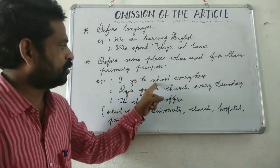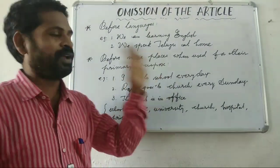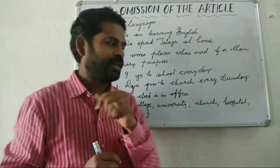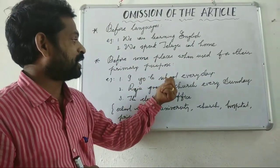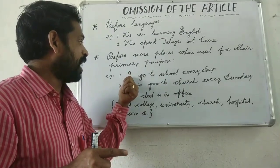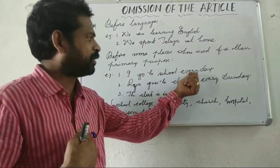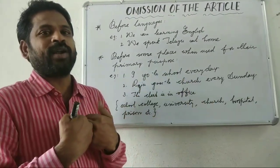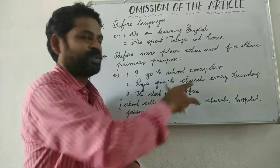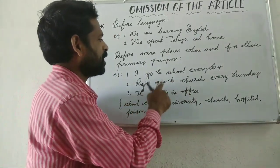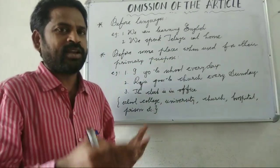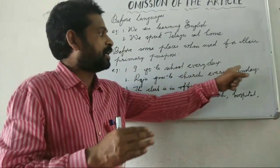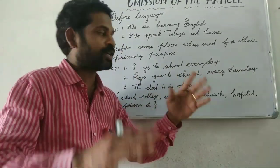Before some places when used for their primary purpose: 'I go to school every day' — not 'I go to the school every day.' Here I am using the word school for its primary purpose; as a student I go to school. 'Raju goes to church every Sunday' — going to church to pray is its primary purpose, so no article. 'The clerk is in office' — office is the place where he gives his service, so it is the primary purpose.